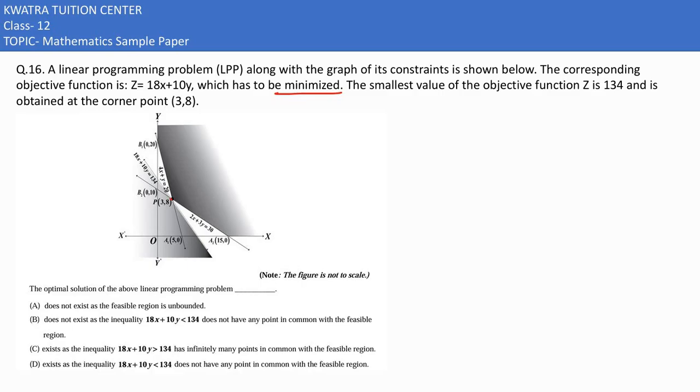Now, what do we need to check here? We need to check options. They are saying optimal solution of the above linear programming problem does not exist as the feasible region is unbounded. Does not exist as the inequality does not have any point in common with the feasible region. This cannot be the case.